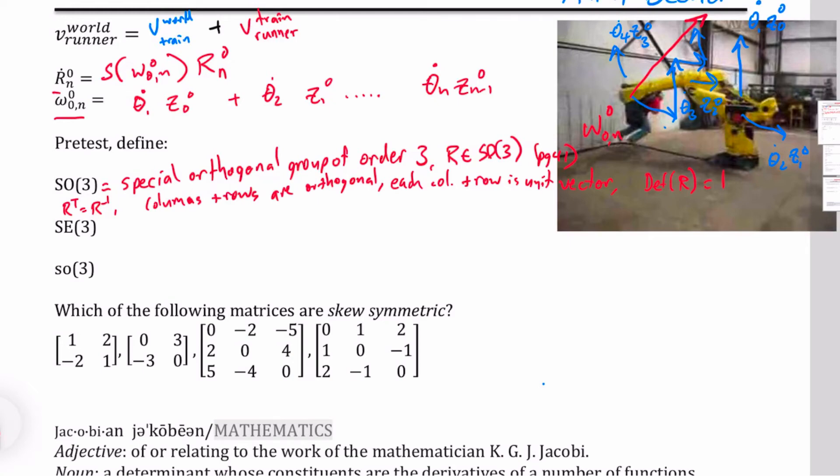Next one that we have is SE(3). And this is also something we know. This is a special, feels like everything is special. Well, this is a special Euclidean matrix of order three. This is the set of all rigid motions. We often will say SE(3) is composed of a translation in R3 crossed with a rotation matrix. So something out of SO(3). You can find this on page 60 in the first edition of the book.